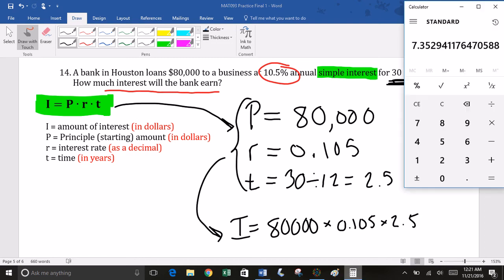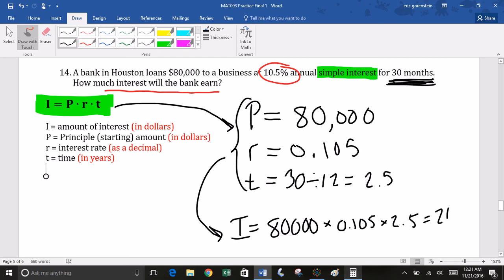Now, let's refer to the calculator for this one. Okay, 80,000 times 0.105 times 2.5 equals, okay, so our interest charge is, in this case, $21,000.